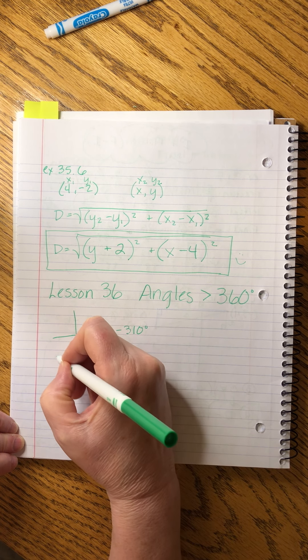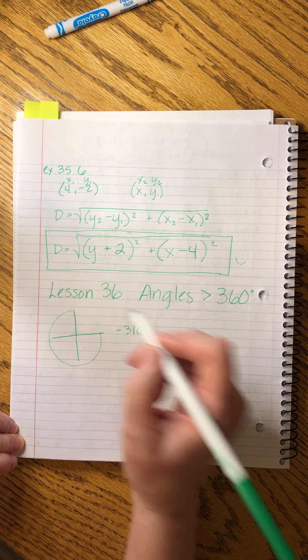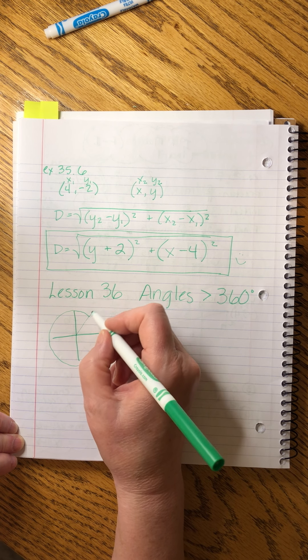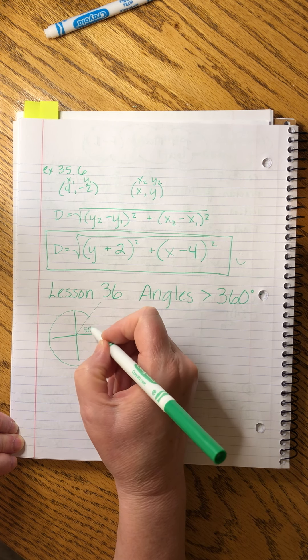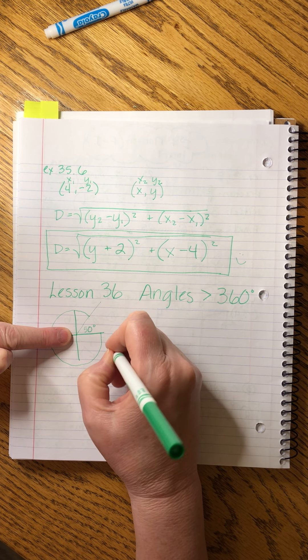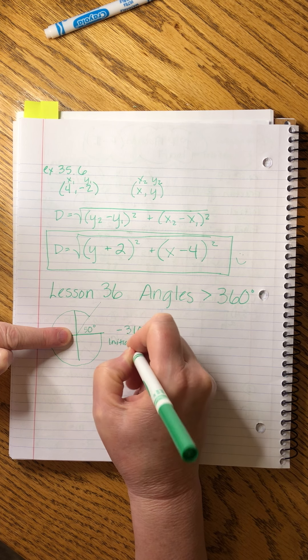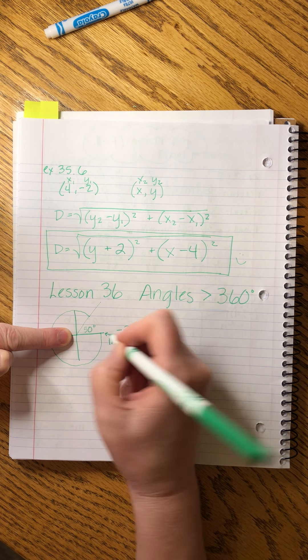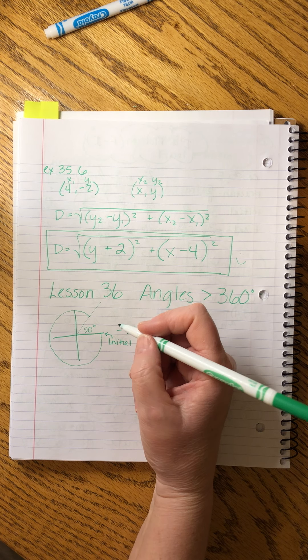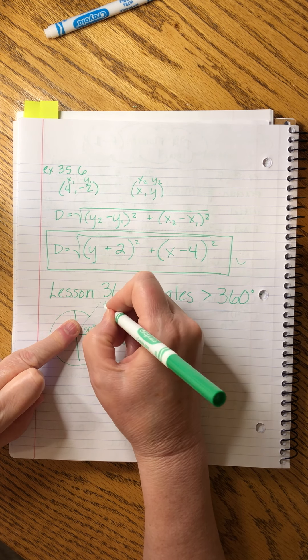There's 90, there's 180, there's 270, so that means we need another 40 here, which leaves us with 50 degrees there. We call this the initial side of the angle, and we call this the terminal side.